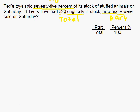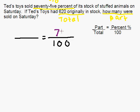Now that we know our key information, we can go ahead and set up our proportion. Draw our two fraction bars and set them equal to each other, and I'm going to automatically put 100 at the bottom of the right side. Above the 100 always goes my percent, so we have 75%, so I'm going to put 75 above the 100. Now, part goes over total. Total — we discussed that 620 is our total — so that goes on the bottom left side, and I'm going to use x for our variable for the part we're solving for.